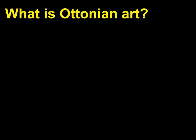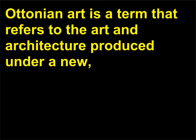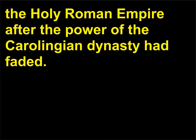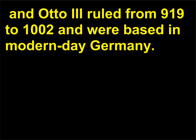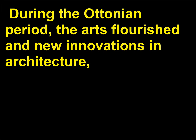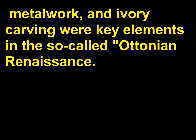What is Ottonian art? Ottonian art is a term that refers to the art and architecture produced under a new powerful dynasty that established itself in the eastern portion of the Holy Roman Empire after the power of the Carolingian dynasty had faded. Three main rulers — Otto I, Otto II, and Otto III — ruled from 919 to 1002 and were based in modern-day Germany. During the Ottonian period, the arts flourished and new innovations in architecture, metal work, and ivory carving were key elements in the so-called Ottonian Renaissance.